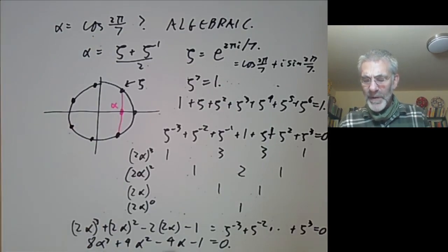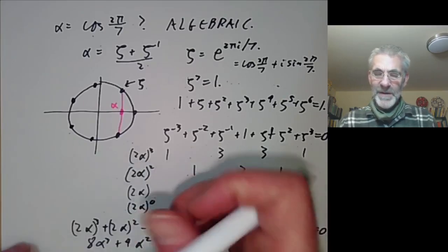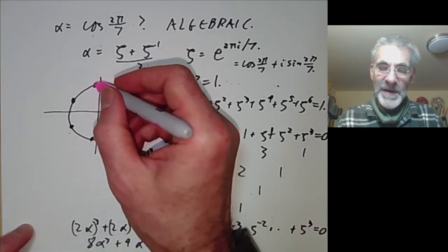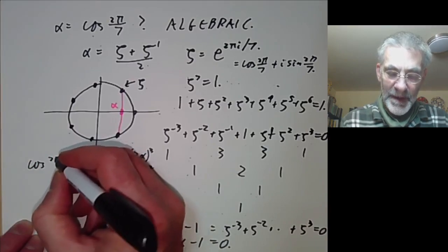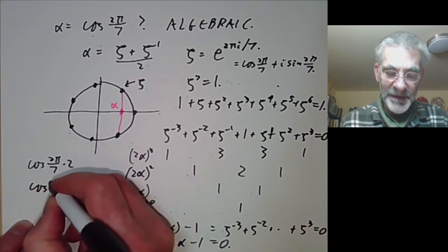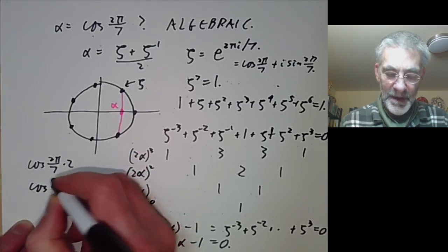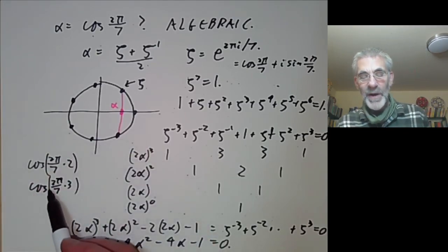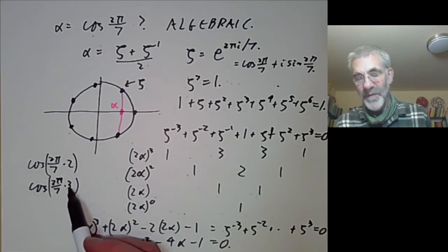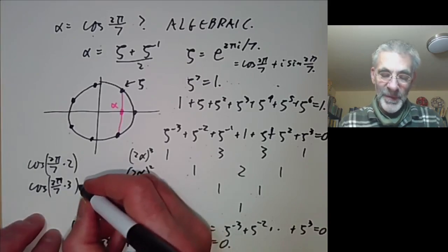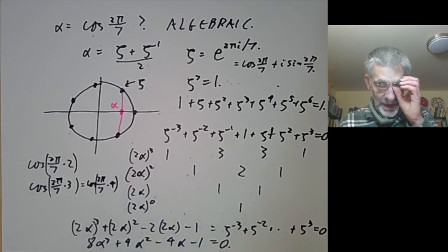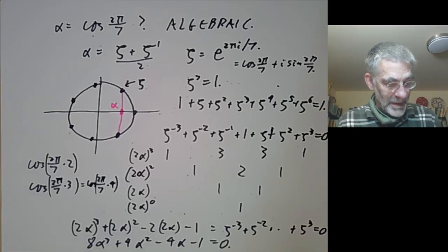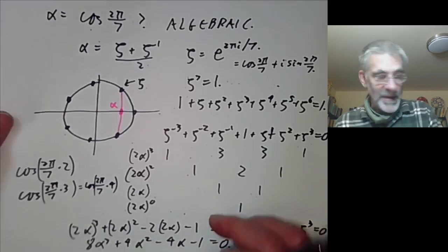You might wonder what the other roots of this polynomial are. That's not very difficult to see, because you can do the same thing with ζ² or ζ³. The other roots are cos(4π/7) and cos(6π/7). In case you're wondering why you don't get cos(8π/7), the answer is you do — it's just that cos(8π/7) equals cos(6π/7). So next we observe that there's a simple criterion for a number to be algebraic.